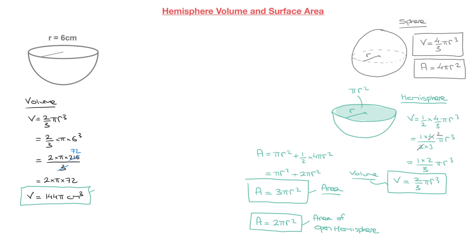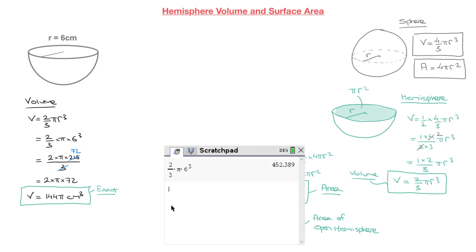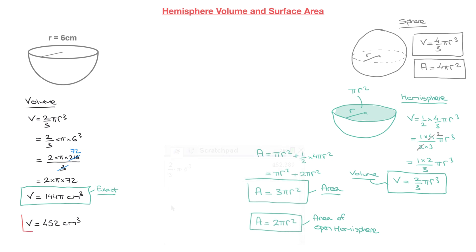If we're allowed to use a calculator and round to the nearest cubic centimeter, I find that this hemisphere's volume is equal to 452 cubic centimeters.